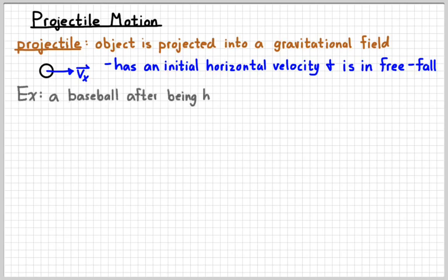An example of a projectile will be a baseball after you have hit it. A simpler example that we've already seen is a marble that rolls off the edge of a table. Those are things that are moving forward and are in free fall.